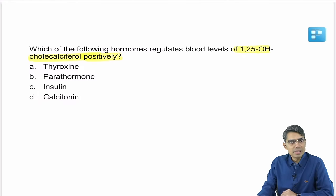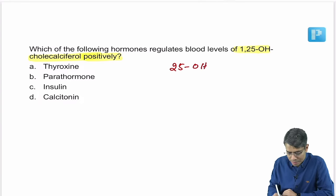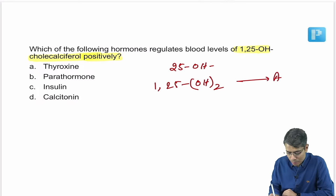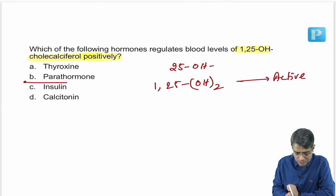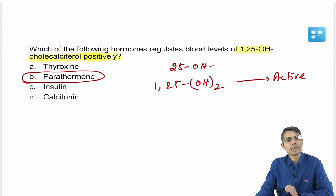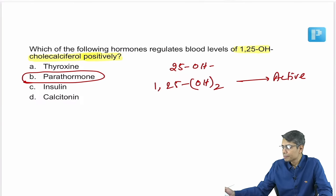Vitamin D3 cholecalciferol has two forms: 25-hydroxycholecalciferol, the inactive form, and 1,25-dihydroxycholecalciferol, the most active form. The activation is done by parathyroid hormone. So the answer here is parathyroid hormone. Other hormones have no effect on this activation.